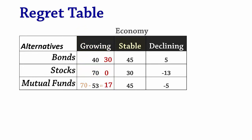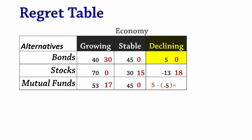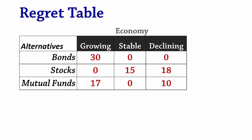If the economy is stable, the best payoff is 45. If we invested in bonds, there is no regret. For stocks, the regret is 15. And for mutual funds, it is 0. For a declining economy, the best payoff is 5. For bonds, there is no regret. For stocks, the regret is 18. And for mutual funds, the regret is 10. So here is the regret or opportunity loss table.